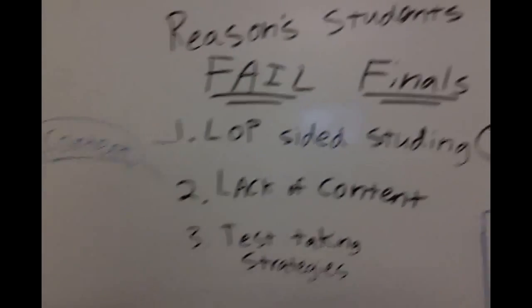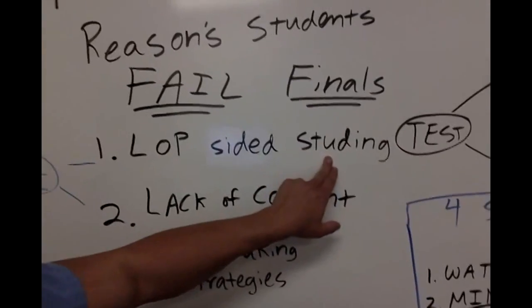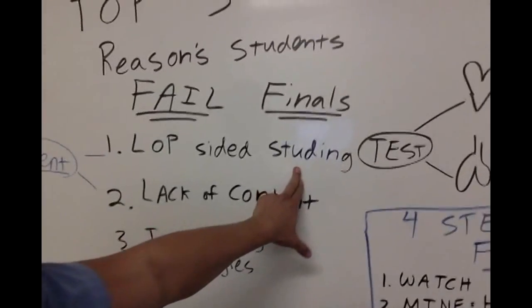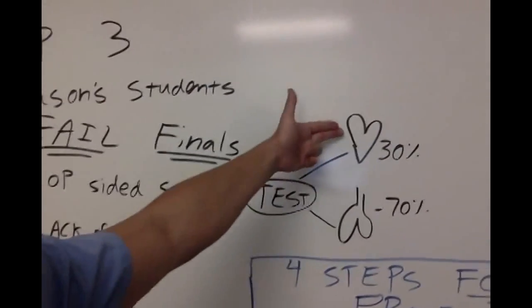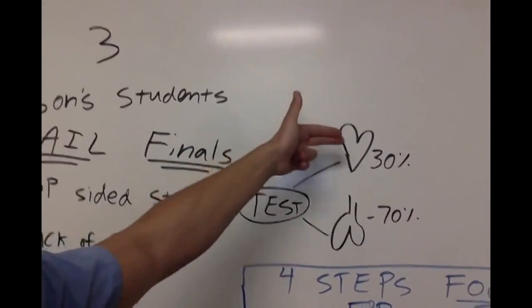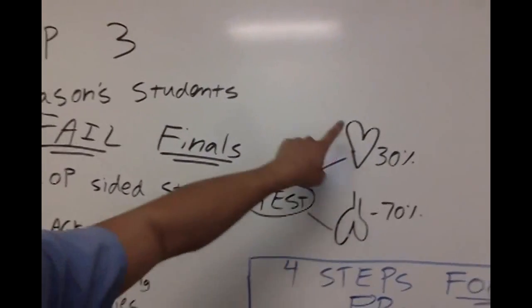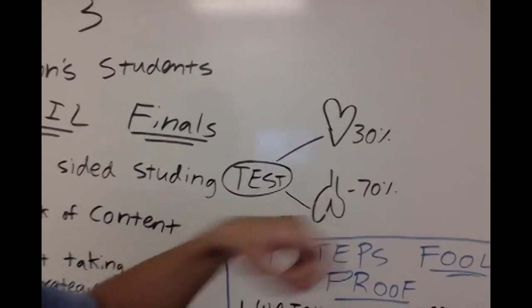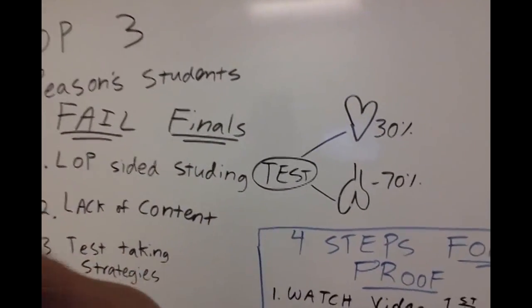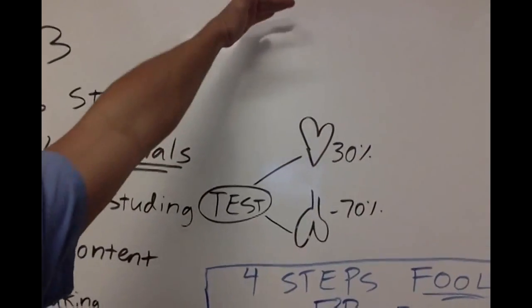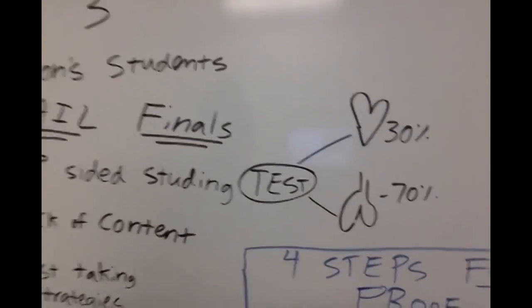Now really, rule number one is lopsided study. I also cover this in my How to Study course, but lopsided studying means you have a cardiac and respiratory test. Let's say heart and lungs test. Now instructors, and especially for your finals, they love to cover a lot of information. Maybe you might have five topics on your final.